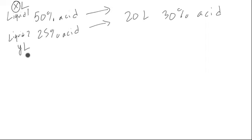Next, we assign variables to things that we don't know. Notice we have liquid one, let's call that x liters. Liquid two, let's call that y liters.